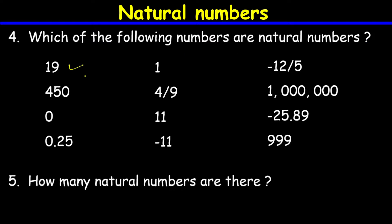Question number four: which of the following numbers are natural numbers? 19 is a natural number. 450 is a natural number. Zero is not a natural number — natural numbers do not include zero. 0.25 is not a natural number because 0.25 is a decimal, and natural numbers do not include decimals.